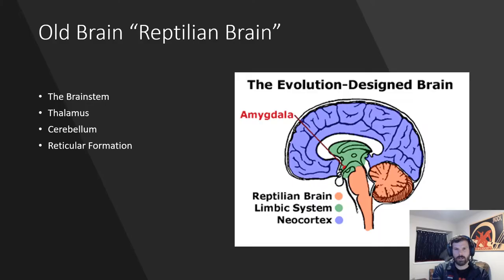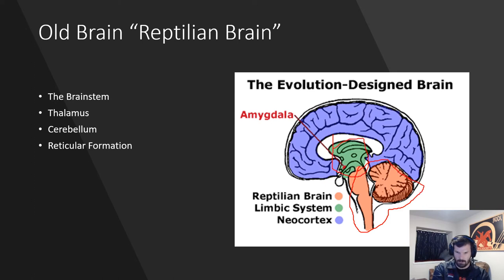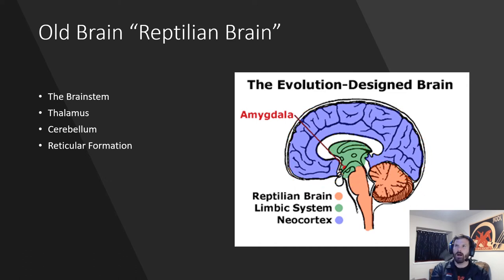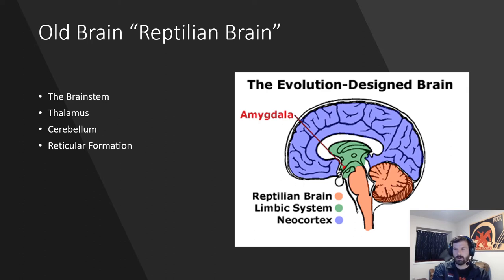Now we're going to transition into talking about the brain and its different parts. We're really just skimming the surface here. There are three different major sections we're going to talk about: the old reptilian brain, the limbic system, and the cerebral cortex on top. We do this to give you an evolutionary look at how the brain progresses and has changed over time, and to see what separates us from other animals.